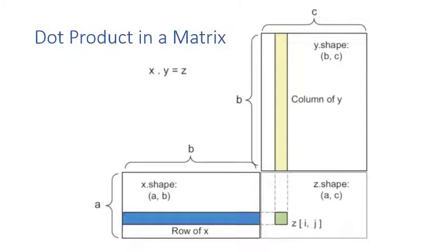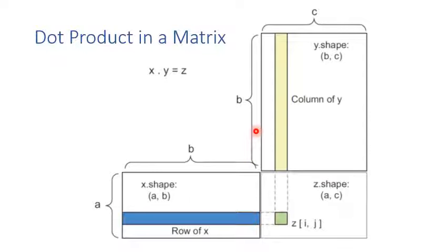In fact, matrix multiplication is actually multiple dot product operations. Element Z[i,j] is the dot product of the i-th row of matrix X and the j-th column of matrix Y. This also illustrates why matrix multiplication requires the number of columns of the first matrix to equal the number of rows of the second — because we're performing dot products.